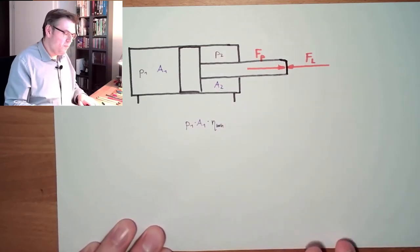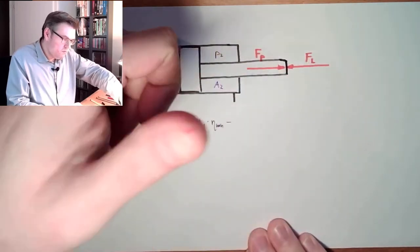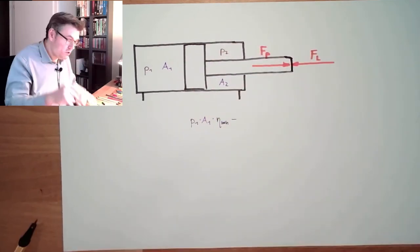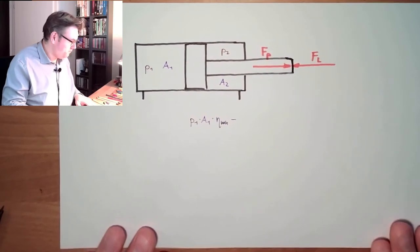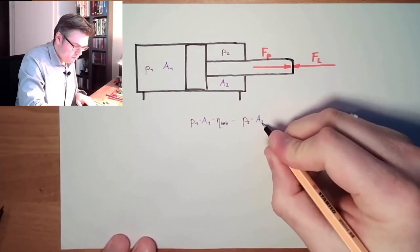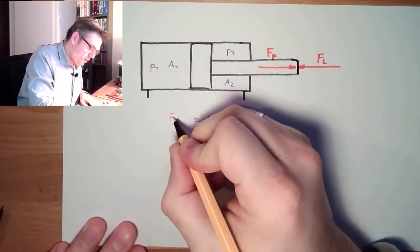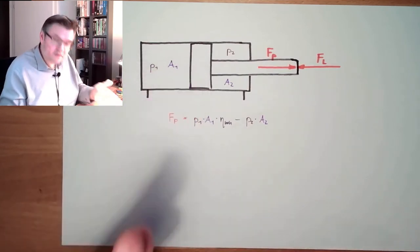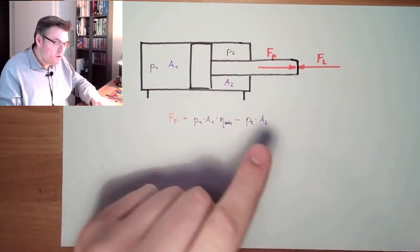On the other side, if we want to move it out, we also have pressure P2 and area A2 — so there is also a force in the wrong direction, because the oil cannot go out without friction and some pressure remains. So the force of the pressure Fp equals P1·A1·η_mh minus P2·A2. This force developed by the cylinder must be equal — or maybe a little bit bigger — than the load for it to start moving.